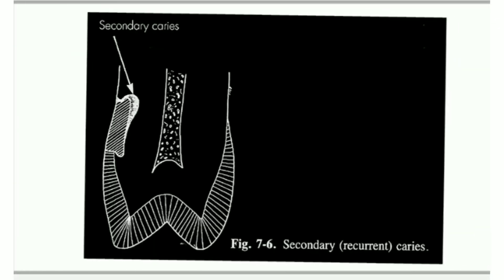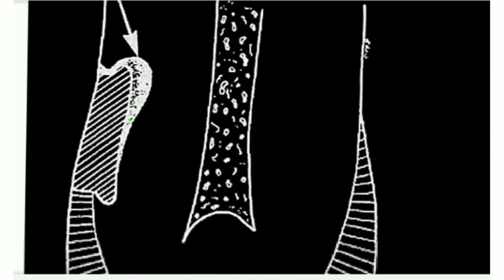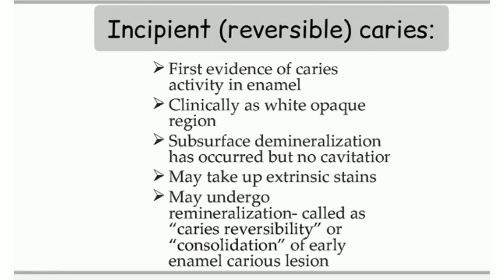You can see in this picture there is a root surface restoration and these are the progressions of secondary caries beneath the restoration. Next is incipient caries or reversible caries. These are the type of caries that get reversed when there is proper remineralization or when stimulation from external sources stops. It is the first evidence of caries activity in enamel. If left untreated and unrecognized, it leads to irreversible caries.